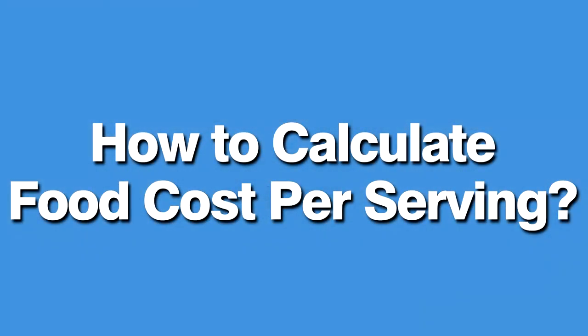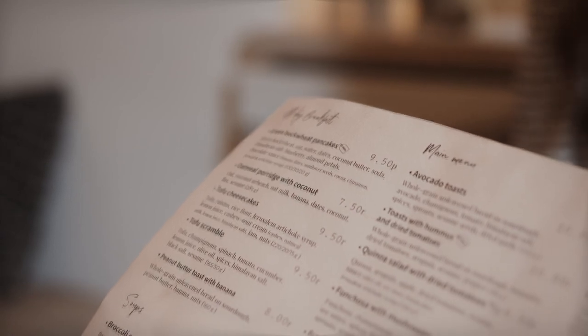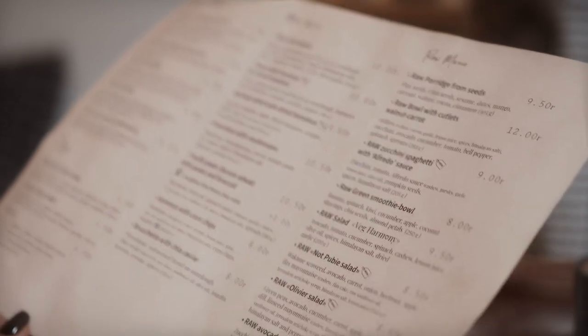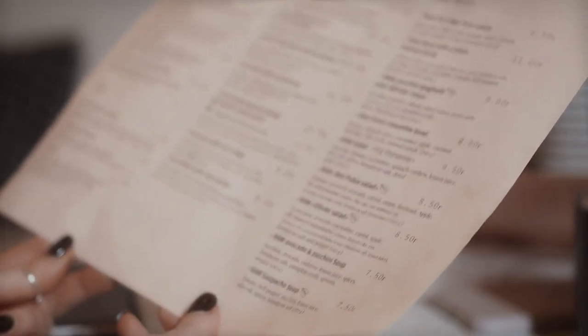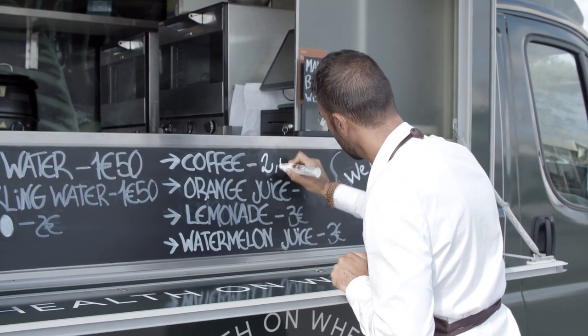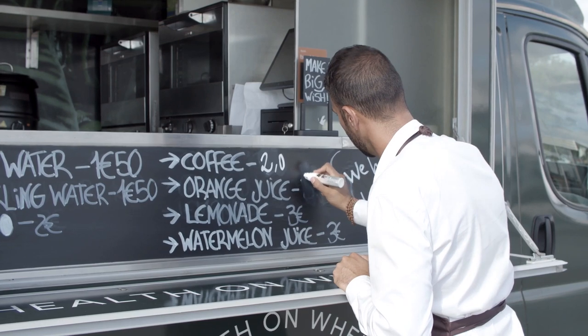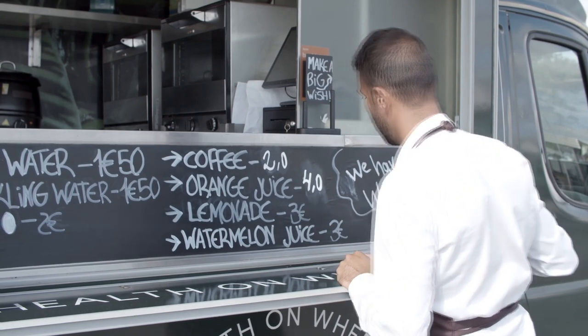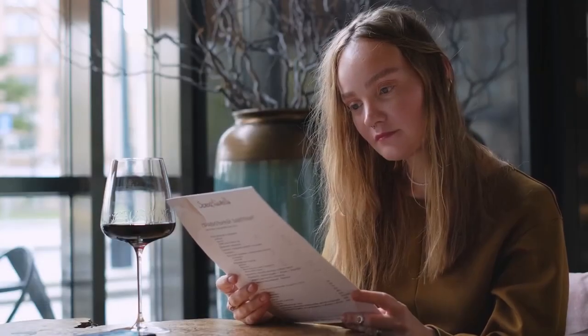How to calculate food cost per serving? You have to determine which are your most profitable menu items and which are not. This data will help you set prices for your menu items correctly — this is also called menu engineering. If a certain menu item has a food cost over 35%, you should definitely increase its price, else you won't make a profit. If a food item has a food cost below 25%, you should lower its price to help it sell more and increase revenue.